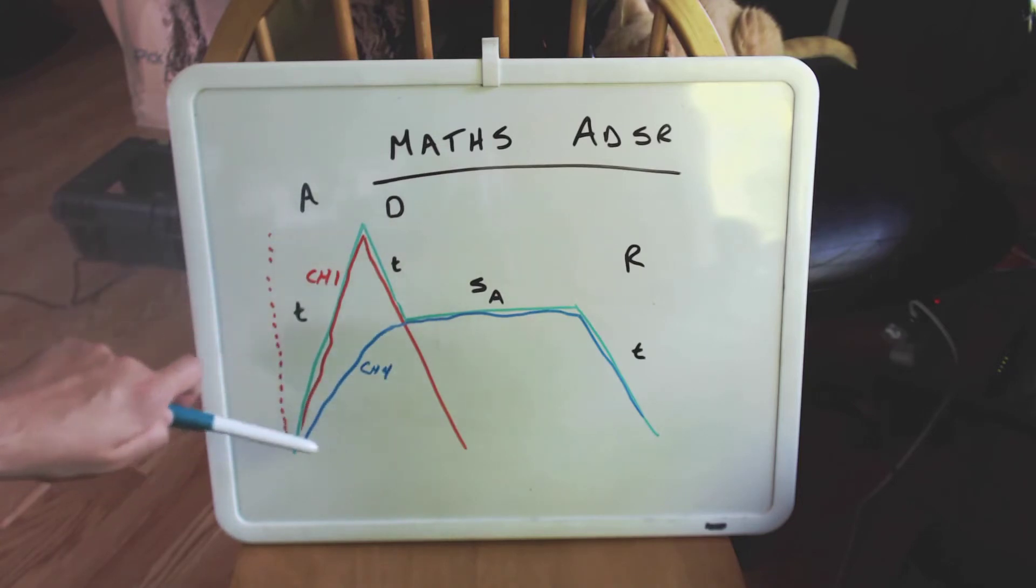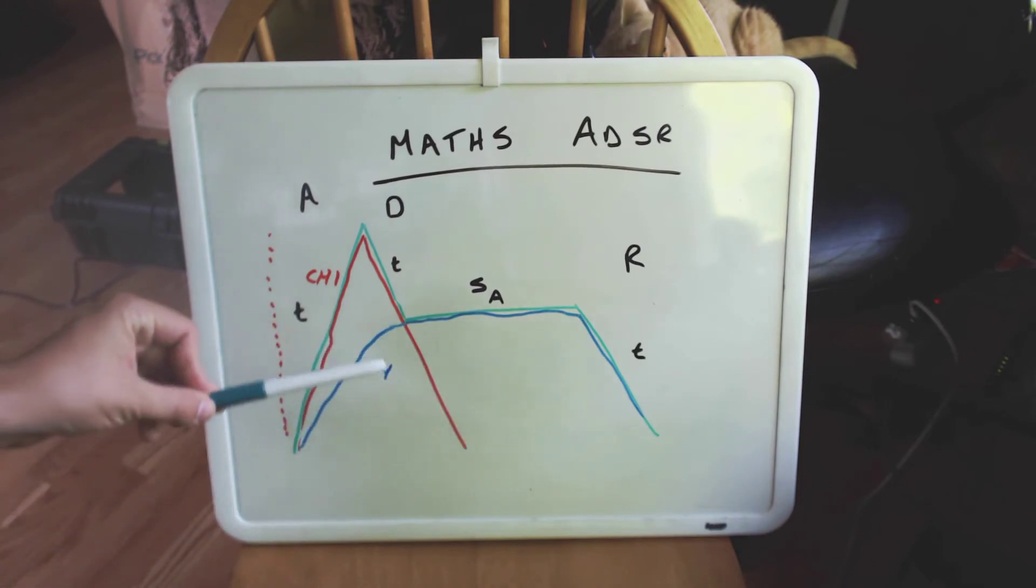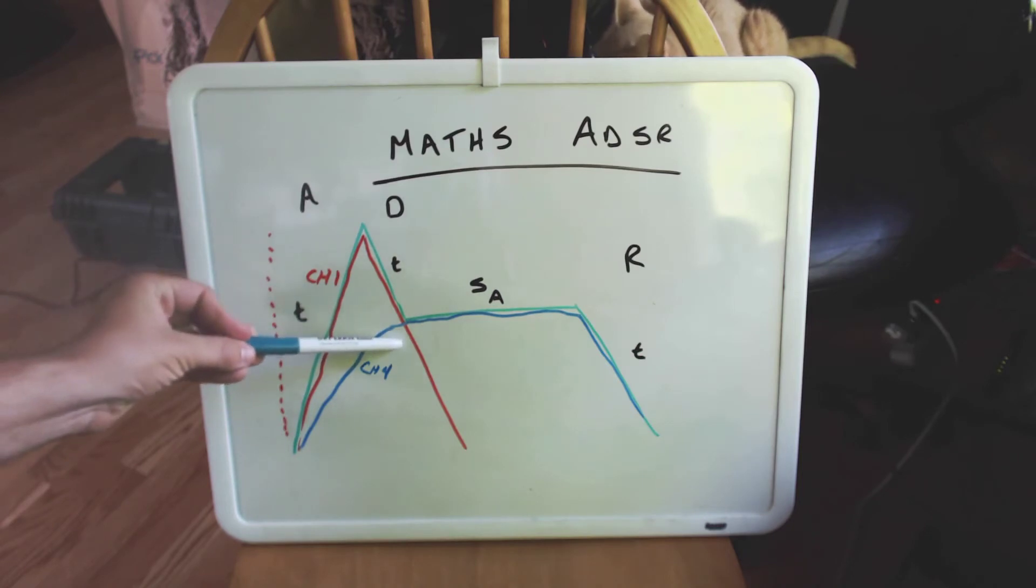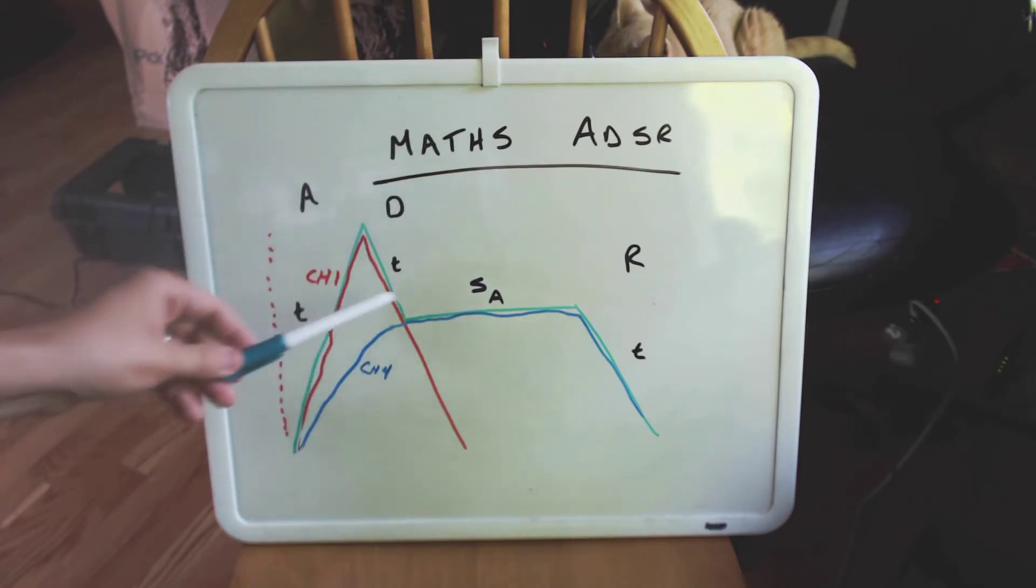For channel 4, we're going to use the rise control, the fall control, but most importantly, the sustain level will be determined by the channel 4 attenuverter. If we have the attenuverter all the way up, our ADSR will basically look like a typical attack sustain release. If we turn that attenuverter down, this sustain level will adjust up and down accordingly.